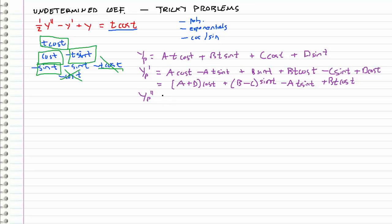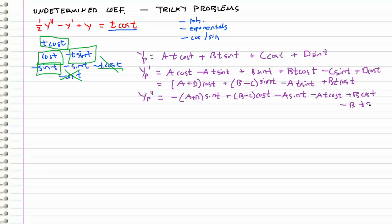Now for yp double prime: differentiating gives negative (A + D) sine t, plus (B − C) cosine t. Using the product rule on the t·sine t term gives minus A sine t minus A t cosine t. And the product rule on the t·cosine t term gives plus B cosine t minus B t sine t. Simplifying: negative (2A + D) sine t, plus (2B − C) cosine t, minus A t cosine t, minus B t sine t.